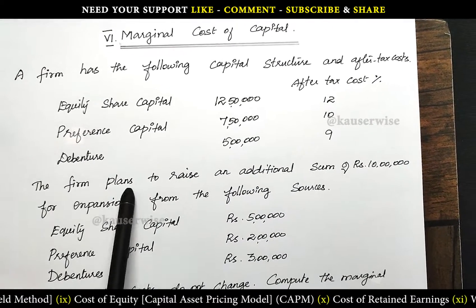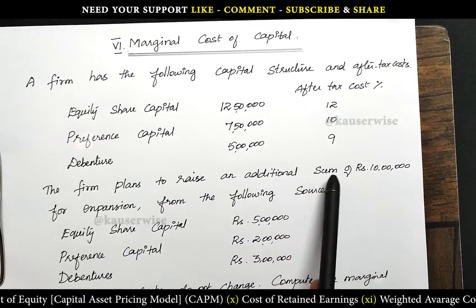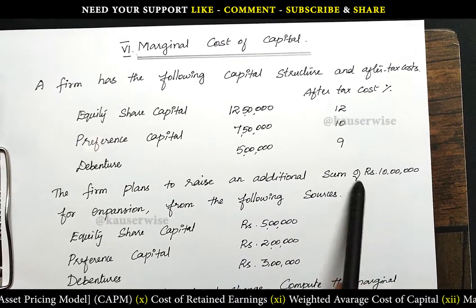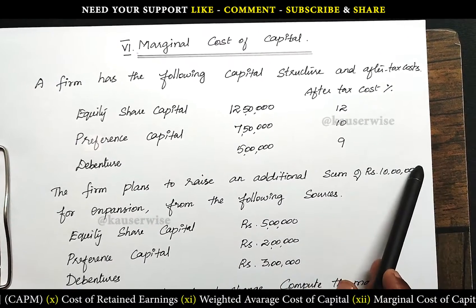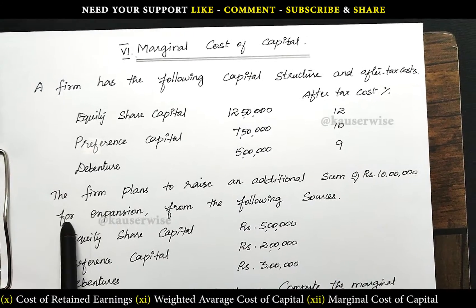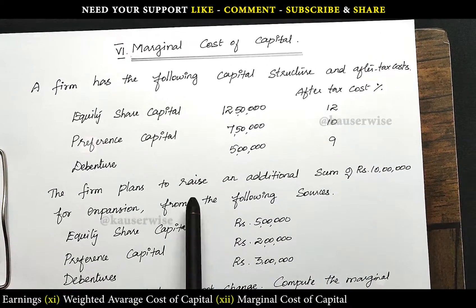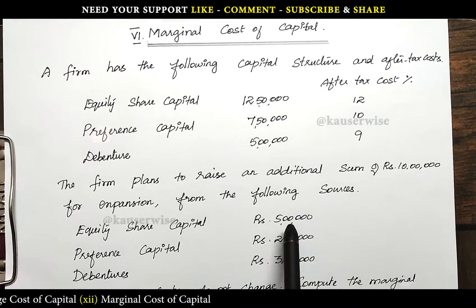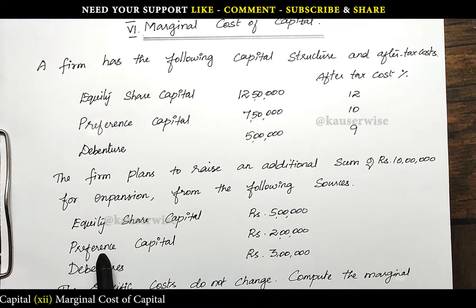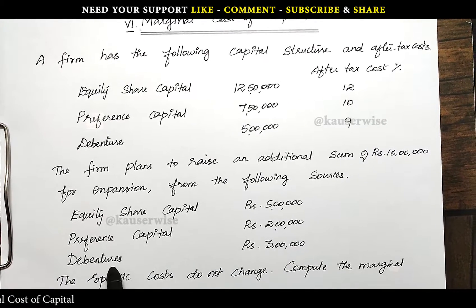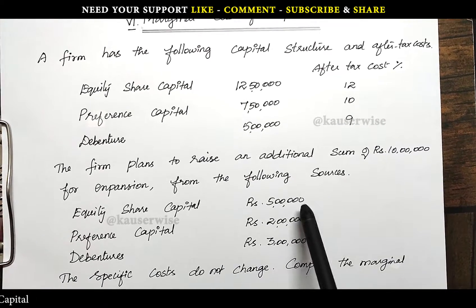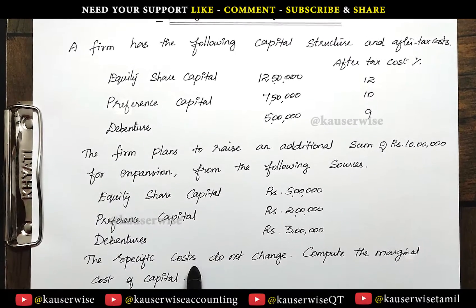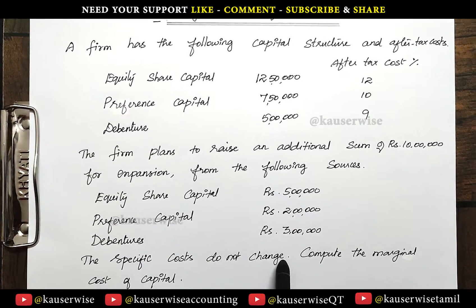The firm plans to raise an additional sum of rupees 10,00,000 — this is the marginal cost, the additional cost — for expansion from the following sources: equity share capital 5,00,000; preference share capital 2,00,000; debentures 3,00,000; total 10,00,000. The specific costs do not change.